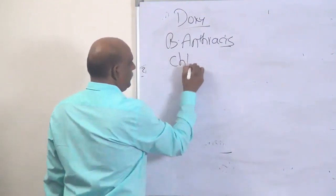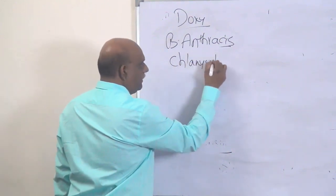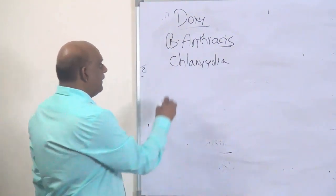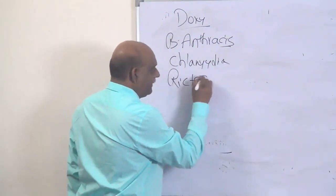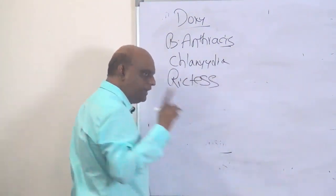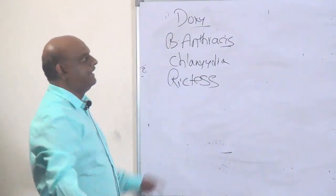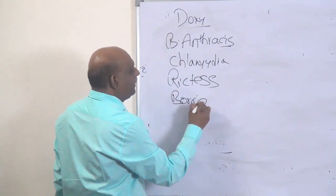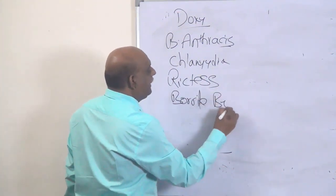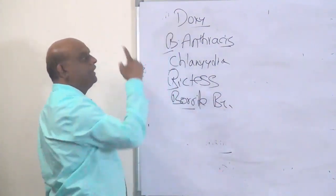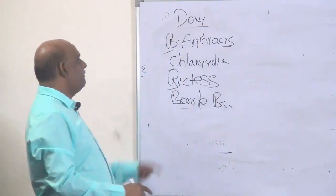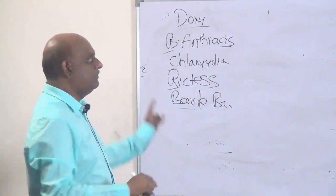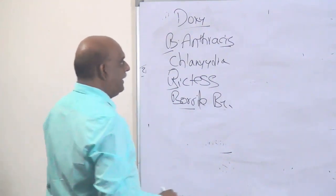Chlamydia — you should think of only doxycycline. Then rickettsia — only doxycycline. And borrelia burgdorferi — in Lyme disease, only one thing you need to remember: doxycycline is the drug of choice.